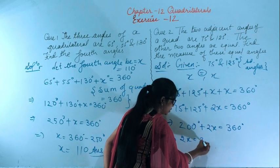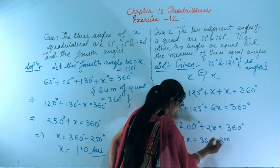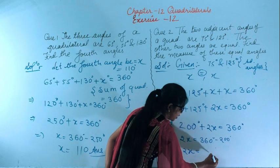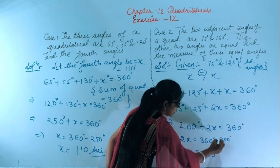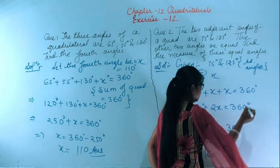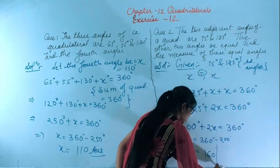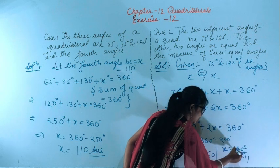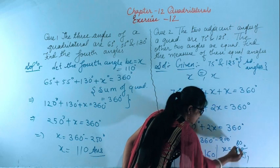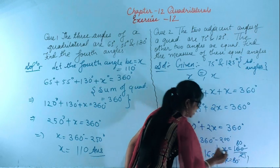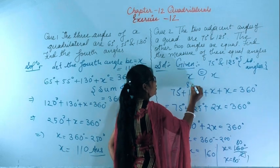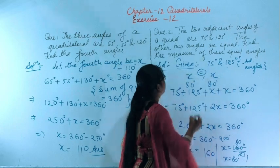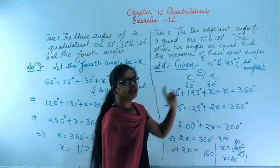So 2x equals 360 degrees minus 200 degrees, which gives 2x equals 160 degrees. Therefore x equals 160 degrees divided by 2, which equals 80 degrees. So both equal angles measure 80 degrees each.